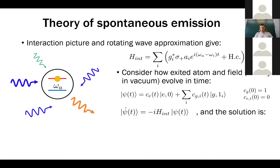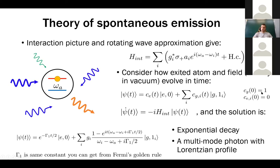The initial conditions are: ground state amplitude is zero and excited state amplitude is one. The result is easy to interpret — we obtain exponential decay of the excited state with constant gamma_1, and a superposition of all possible single-photon occupations of all possible modes. Analyzing the answer, the photon is redistributed over all modes with a Lorentzian spectral profile, which in the time domain is just a decaying exponential.